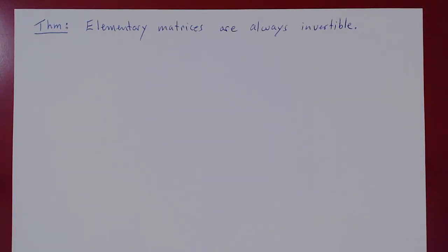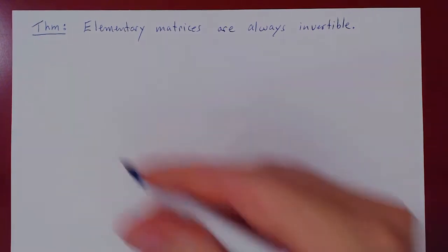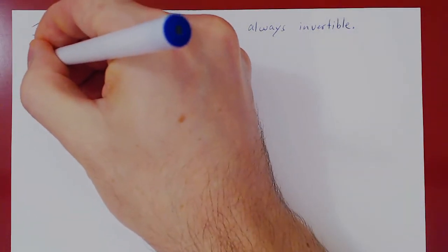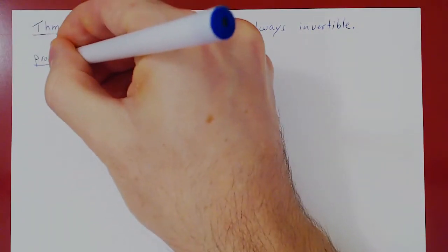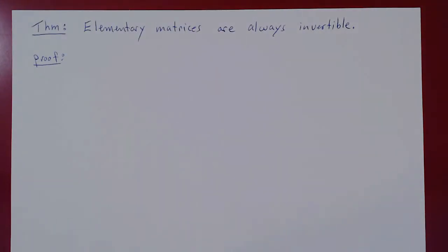Let's prove this, and the proof is surprisingly easy. If you remember, there are only three types of elementary matrices, each one corresponding to the given row operation.